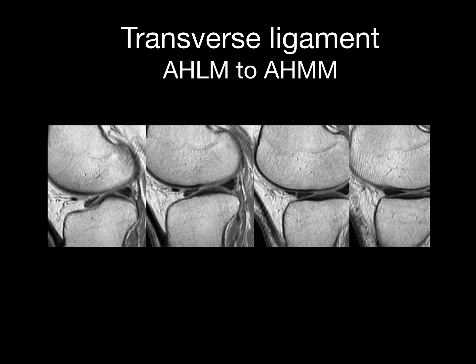Another source of confusion is the transverse ligament, which extends from the anterior horn of the lateral meniscus to the anterior horn of the medial meniscus. The best way to differentiate these from tears is to follow it along. It's easy to see it's not a tear because it lies within the anterior fat; it gets closer to the meniscus and on the third image it has the appearance of a tear, then you see joining of the anterior horn of the meniscus.